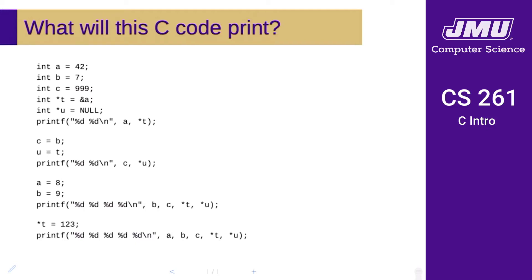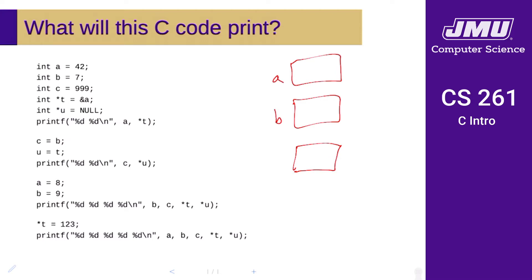Here's a little example that's useful to work through. What is this C code going to print? We have some declarations of integers and some pointers. In this course, we're going to draw pictures of memory. The first three variables will be represented as three boxes in memory, labeled with the name of the variable — a, b, and c — and I'll also mark the types of each variable.